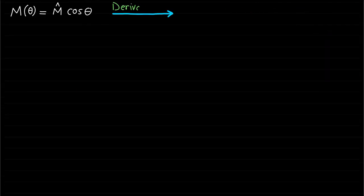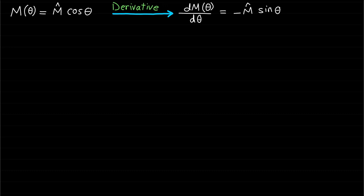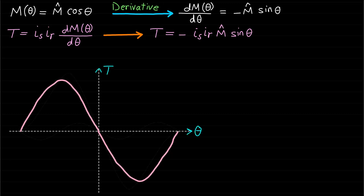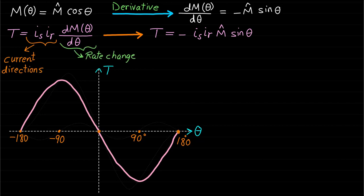By taking the derivative of the mutual inductance, the final torque expression will be T equals minus is·ir·M-hat·sine(theta). This torque expression can be plotted as shown. It is very clear that the direction or sign of the mutual interaction torque component depends on the current's direction as well as the rate of change of the mutual inductance.